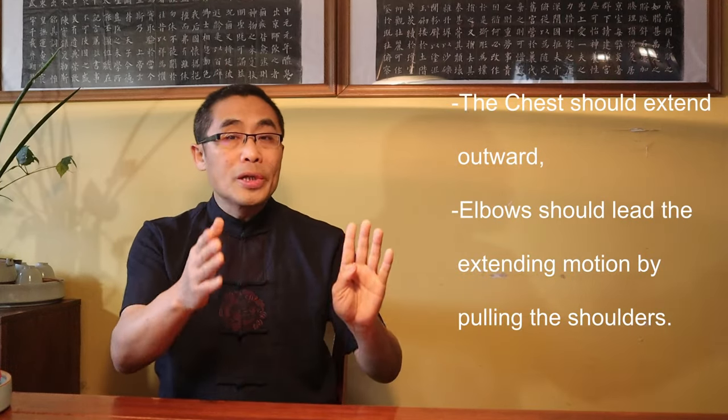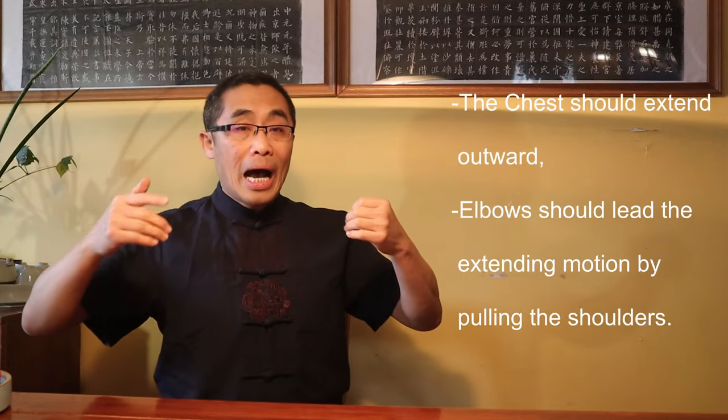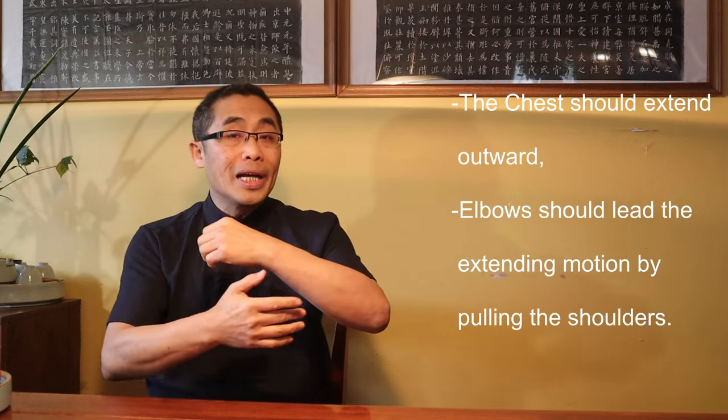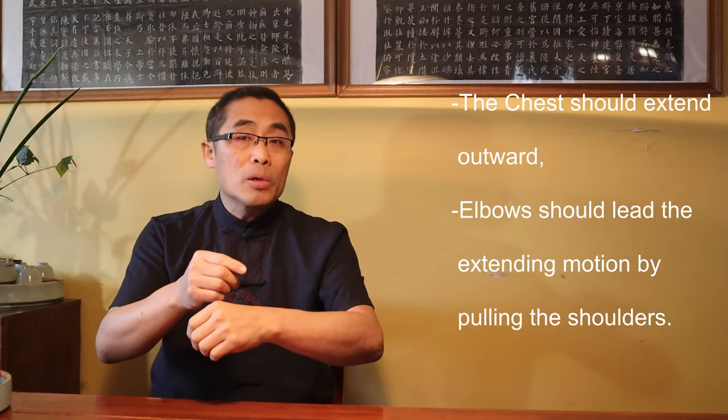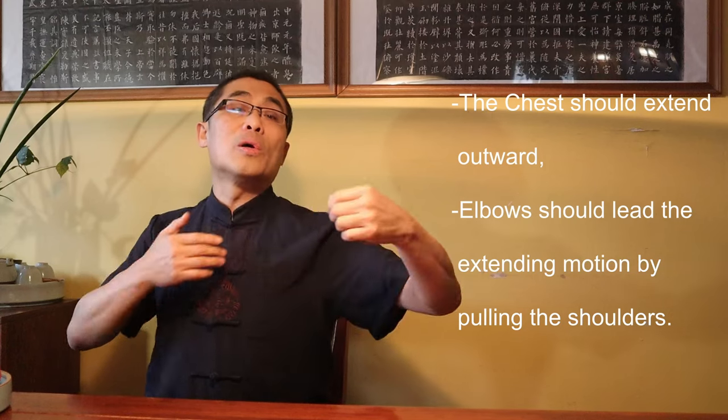First, the chest should extend outward and elbows should lead the extending motion by pulling the shoulders. It's just like this. In other words, chest pushes, elbows extend, and elbows pull the shoulders.